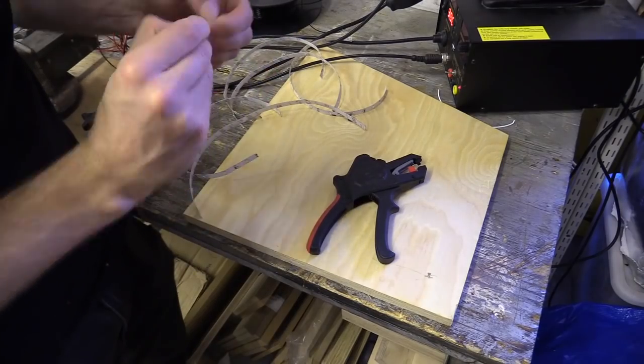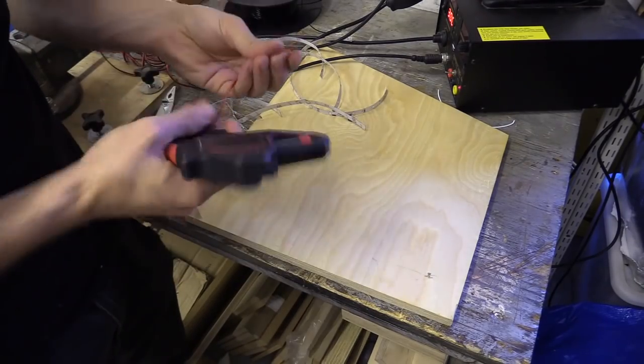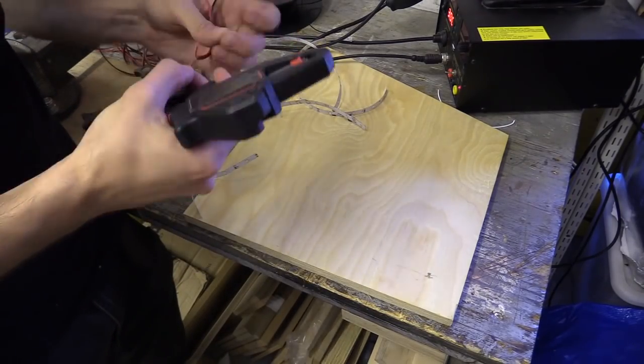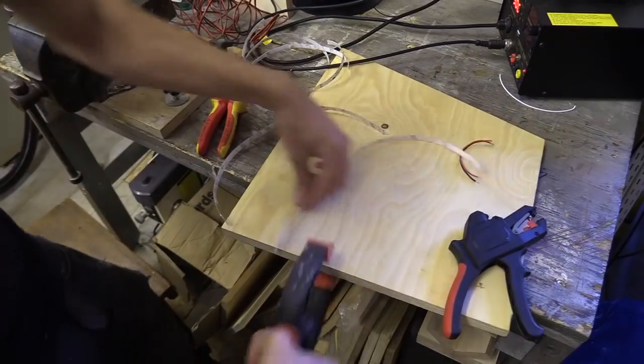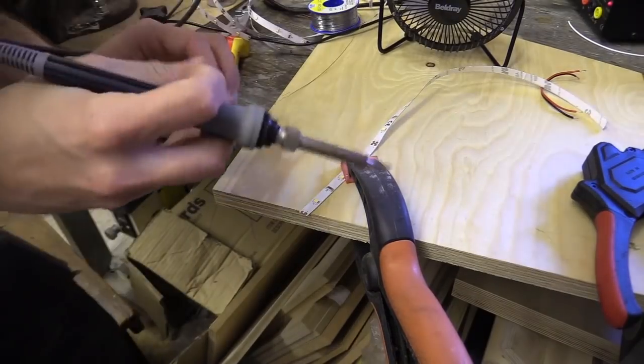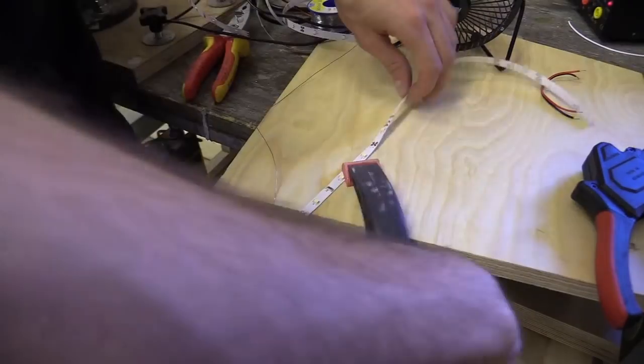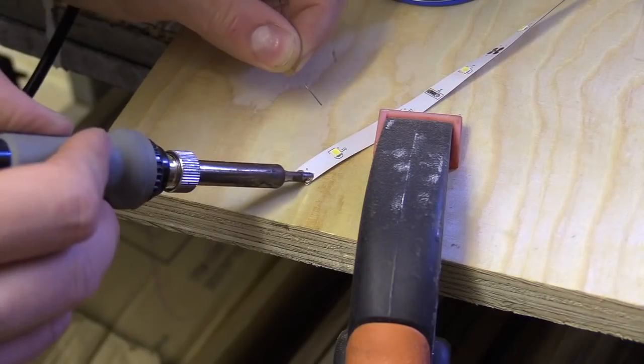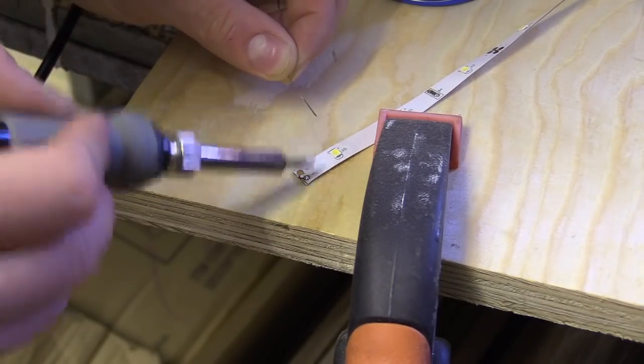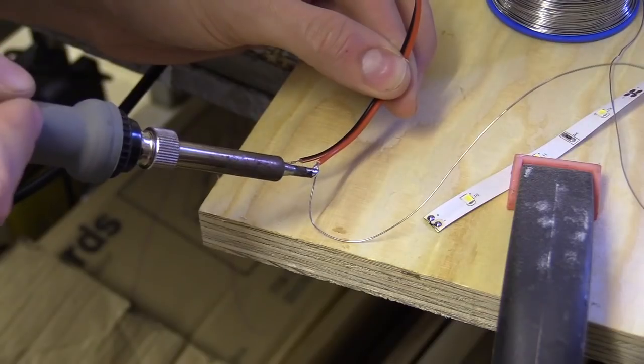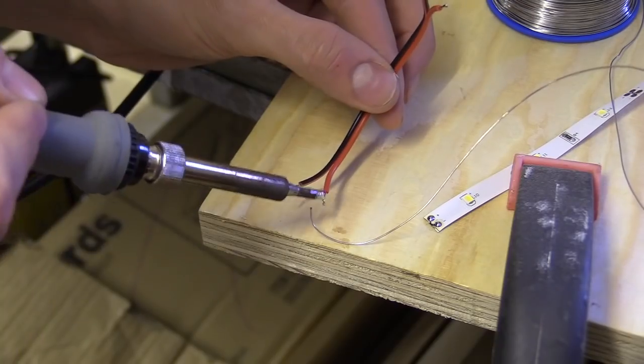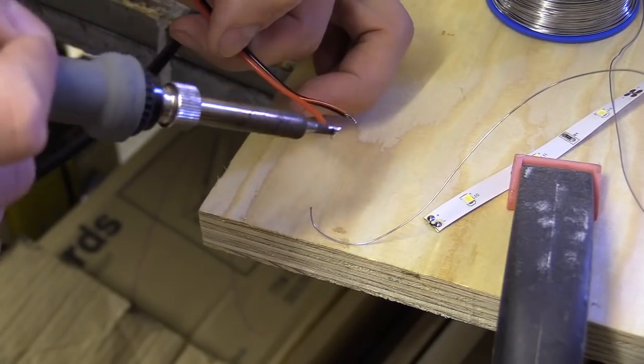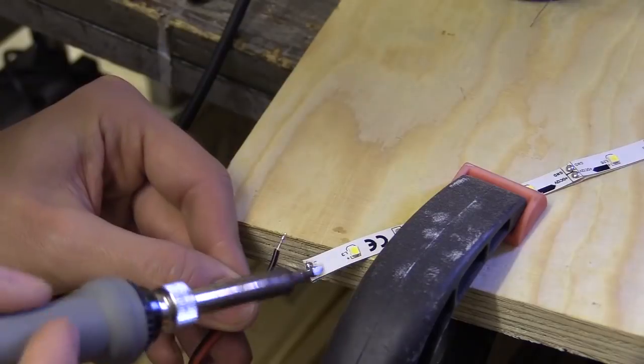I then tinned all the exposed end terminals and either end of the joining wires that will connect the strips together. I found holding the soldering iron with some solder suspended at its tip on the copper pads helped to transfer the solder across. And for the wires, do a similar thing with suspended solder on the tip but pushing more solder into the wire from the opposite side.